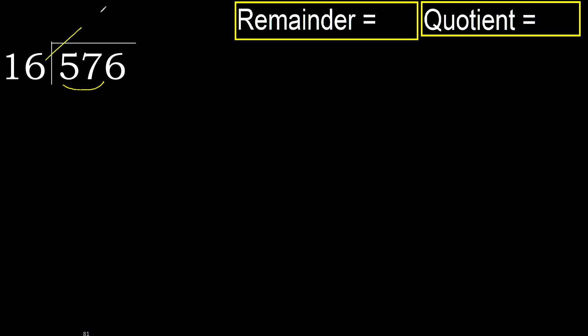16 multiplied by which number is nearest to 57 but not greater? 16 multiplied by 4 is greater. Multiplied by 3: 48 is not greater.